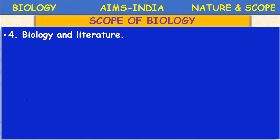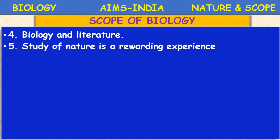Biology and literature: the knowledge of natural biology has greatly enriched literature, with references in stories and poems. Poets and other authors have been inspired by beautiful and interesting plants and animals, frequently featuring them in stories, poems, and drama. The study of nature is a rewarding experience — plants like marigold, roses, dahlia, and asters are used for ornamental purposes. The variety available in animals is widely enjoyed in zoological parks.